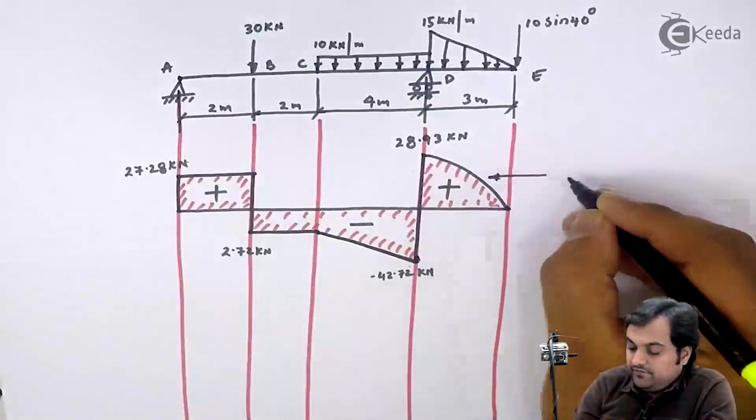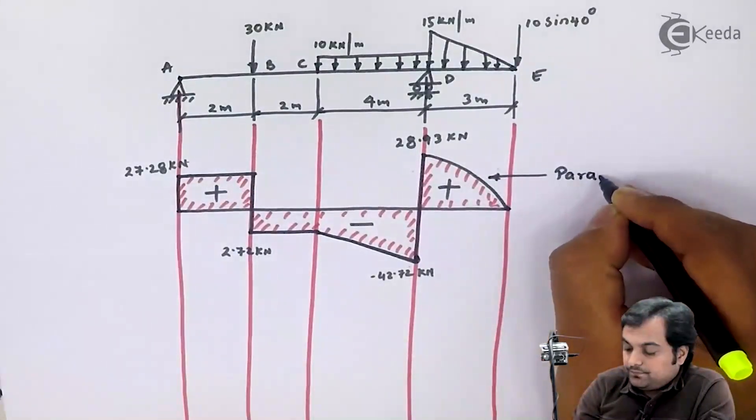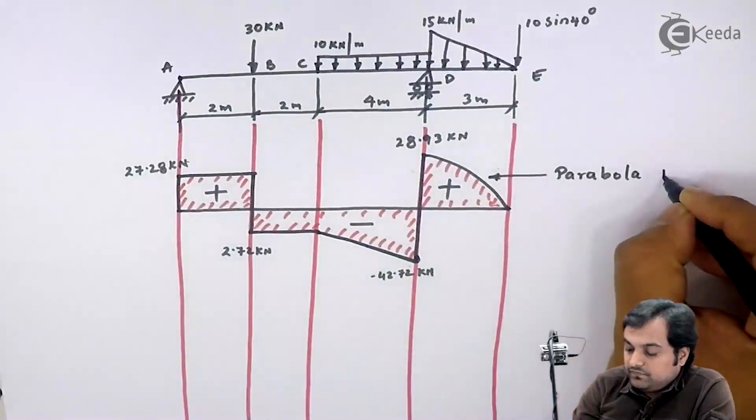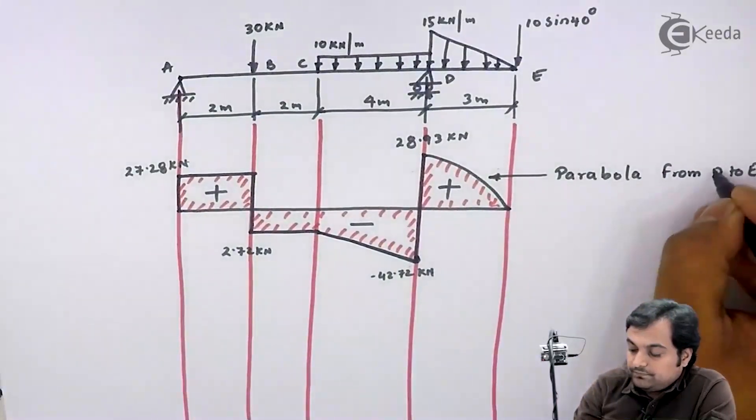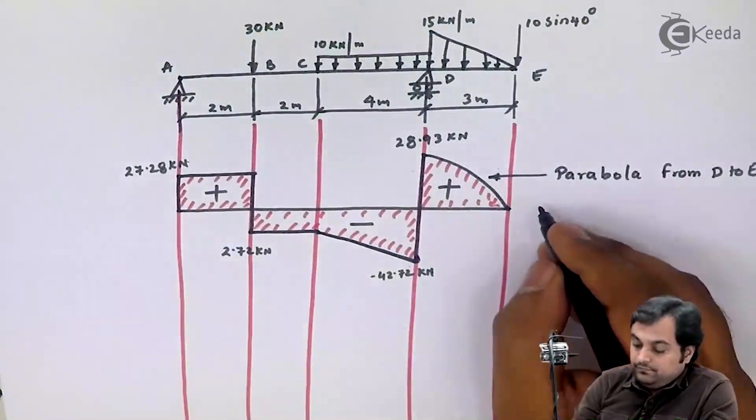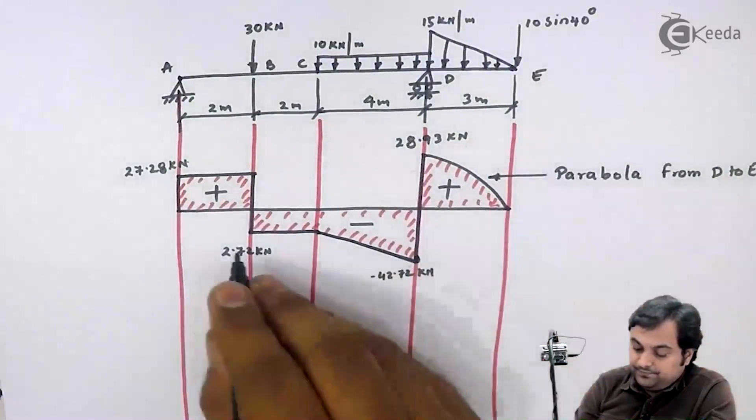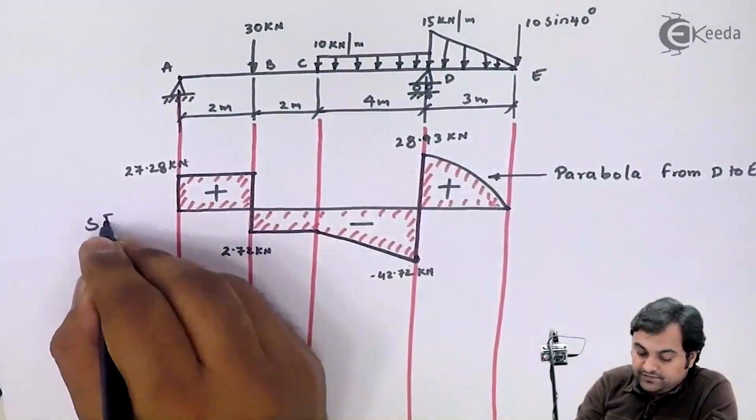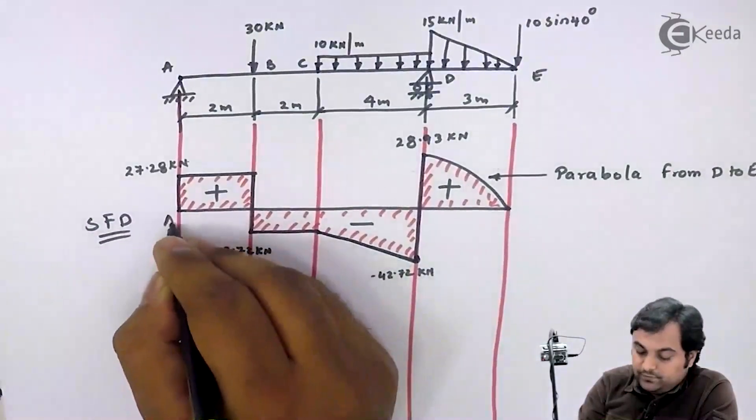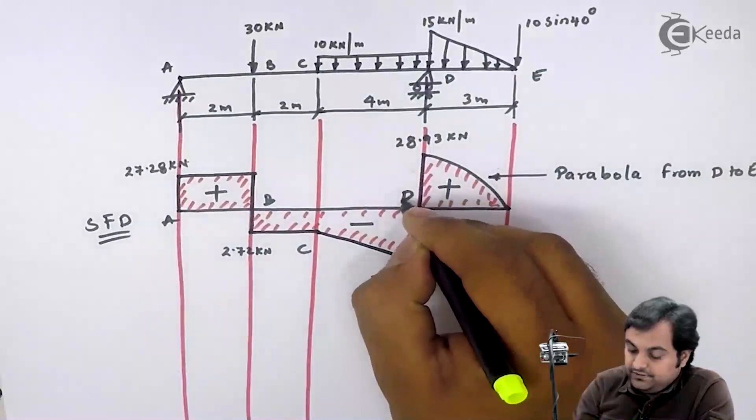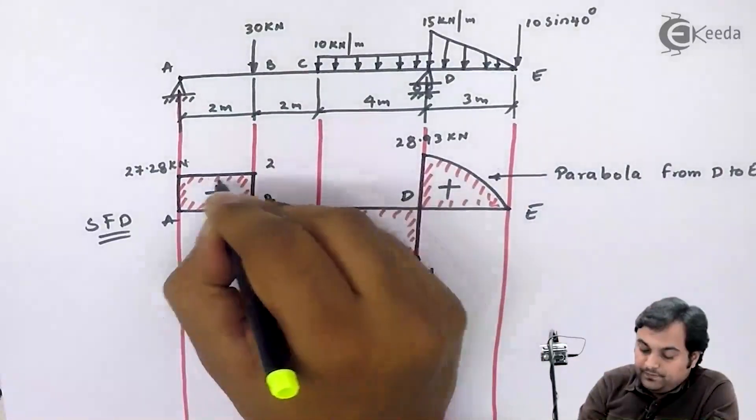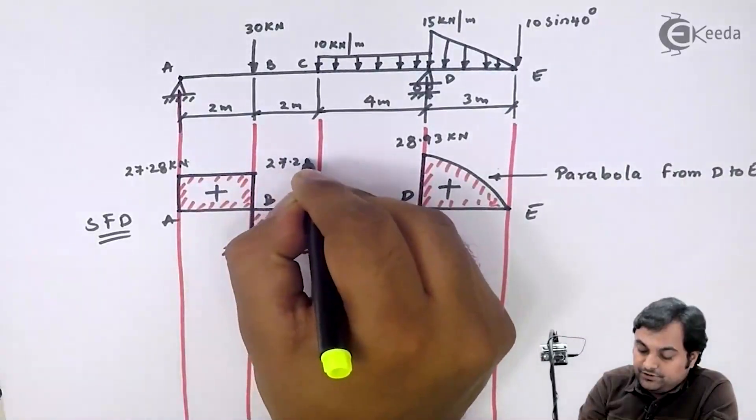Here we have parabola from D to E. Next here is my SFD point A, B, C, D and E. Between A to B it is constant.